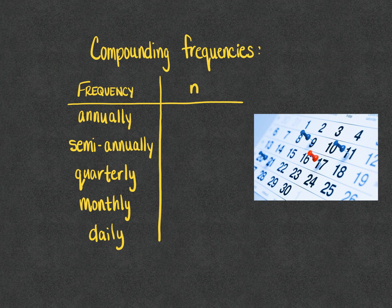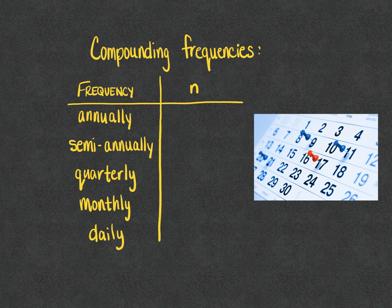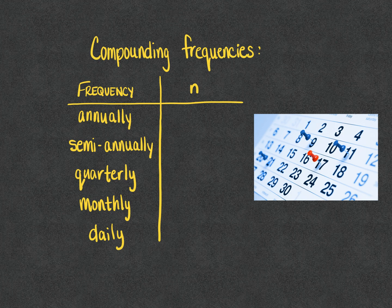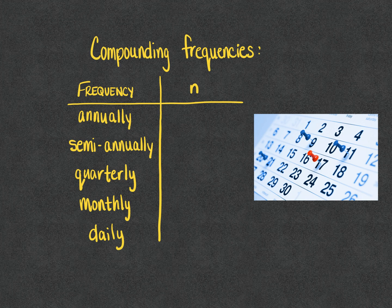As far as how often interest is compounded, interest can be compounded really as often as the lending institute or the institution where you're putting your money wants to compound it, but there are five that are the most frequently discussed.